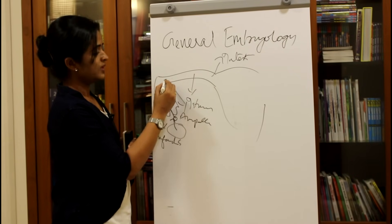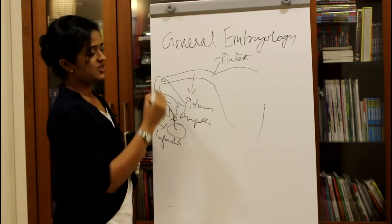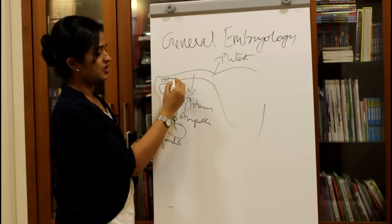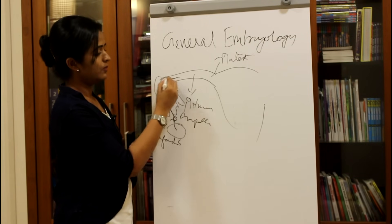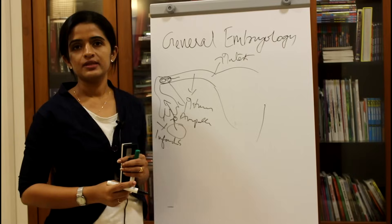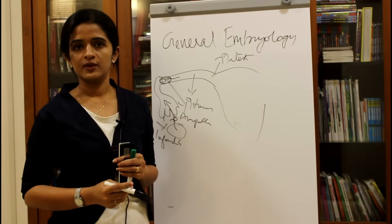The oocyte will be reaching the ampulla and the sperm will be reaching the ampulla, and both will get fertilized at the ampulla.